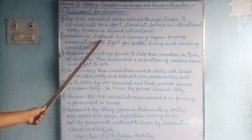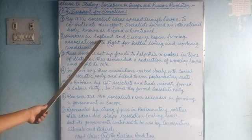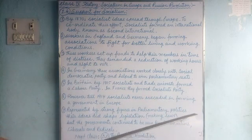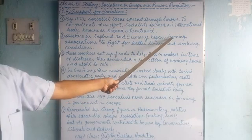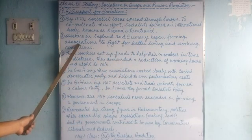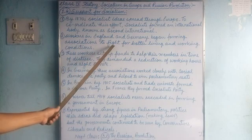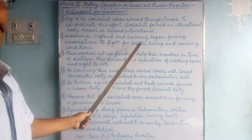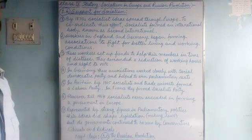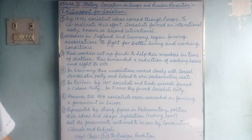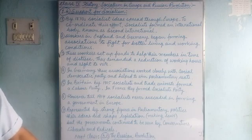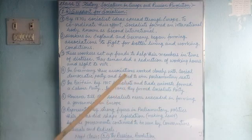Let's talk about various countries and what socialists did there. Workers in England and Germany began by forming associations — groups and organizations to fight for better living and working conditions, better wages, and reduction in working hours. They united themselves and formed organizations in various countries, and all these organizations around Europe were connected.